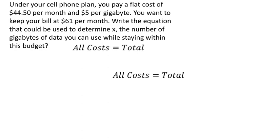I'm going to go back and see if I can find some information that will be useful for us. I'll keep in mind that I'm looking to make the costs equal to the total. What are some costs that we have? Reading through this, you have a flat cost right here. It's $44.50 per month. That right there is a cost. You're also paying $5 per gigabyte. That would be a cost, the gigabytes.